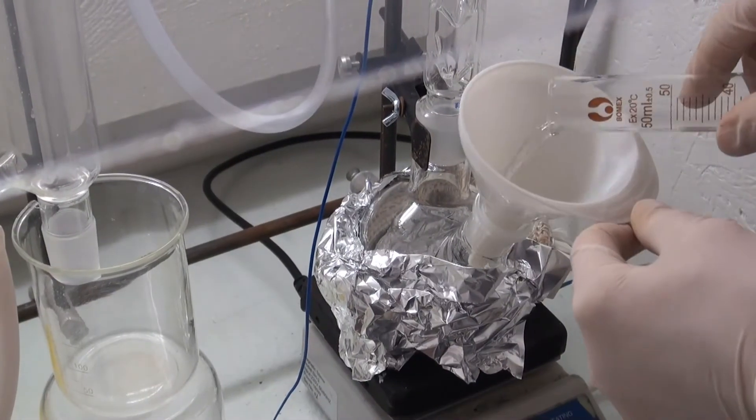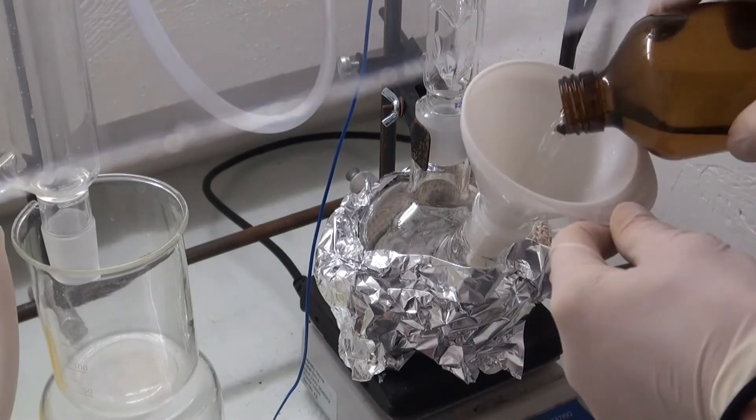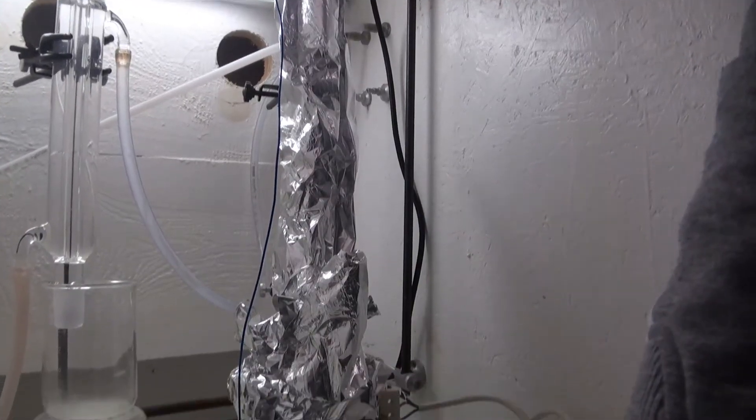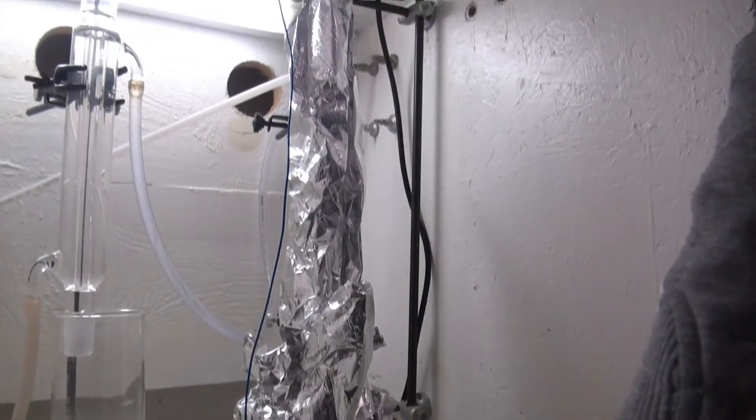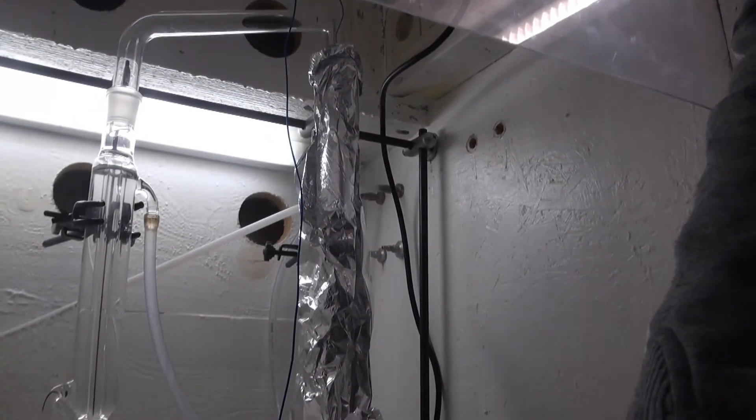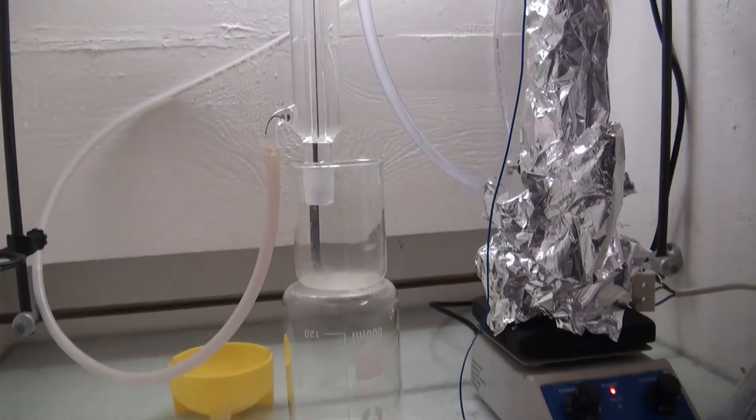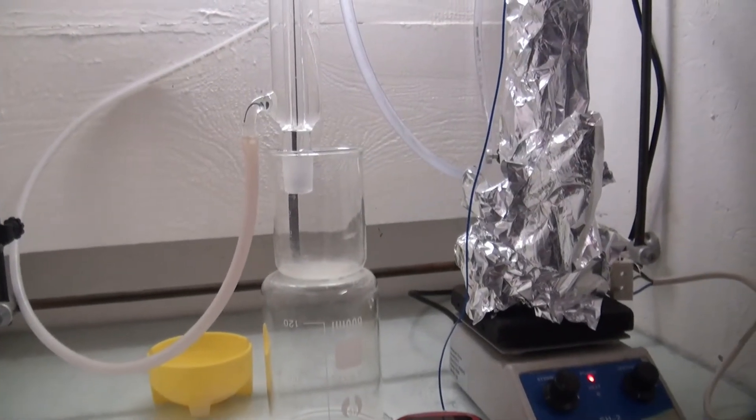The acid was added to the flask and the heating was started. The flask and the column were wrapped in aluminum foil to isolate it. But it was important not to wrap it too much, because this could reduce the effectivity of the fractionating column.